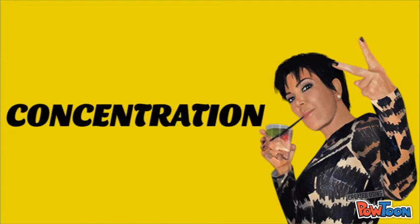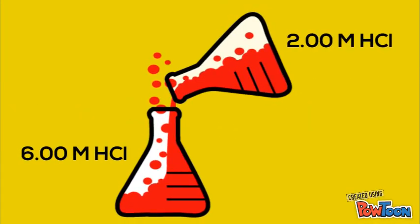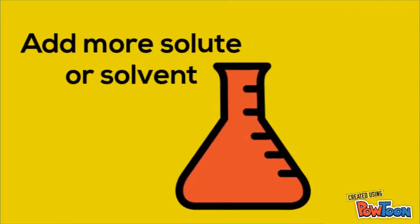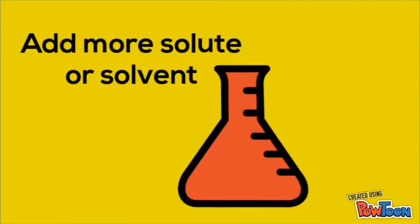Second, concentration. In terms of the collision theory, increasing the concentration of a reactant increases the number of collisions between the reacting species per second, and therefore increases the reaction rate. You can change the concentration of an aqueous species simply by adding more solute to make it more concentrated, or adding more solvent to make it more dilute.